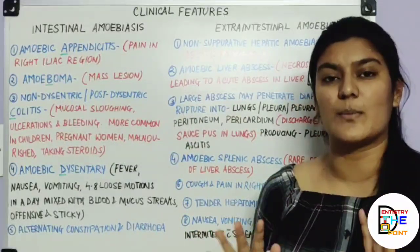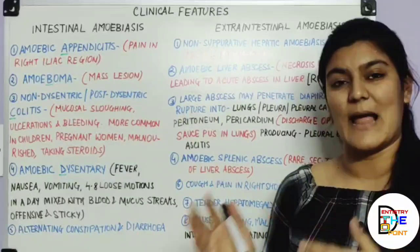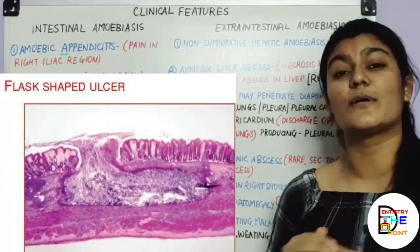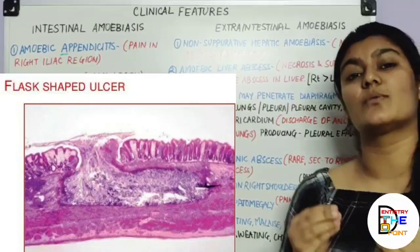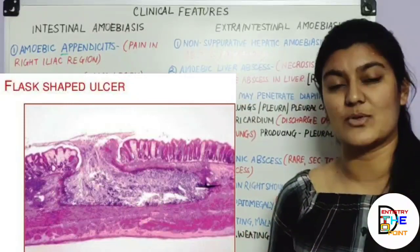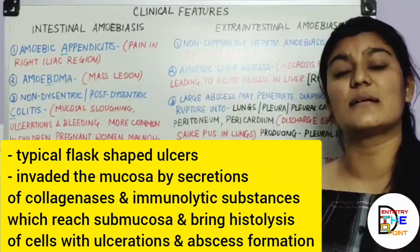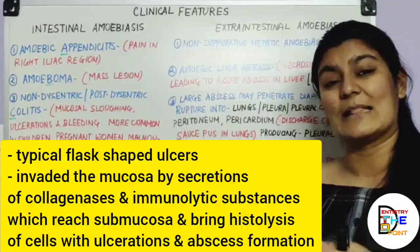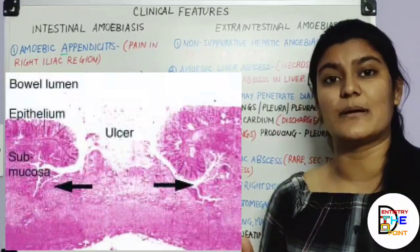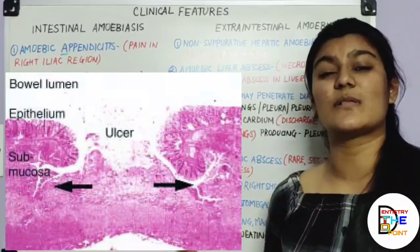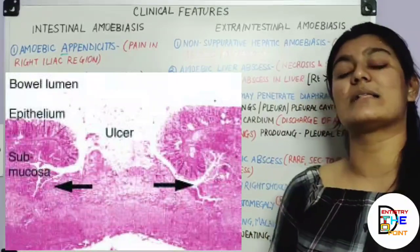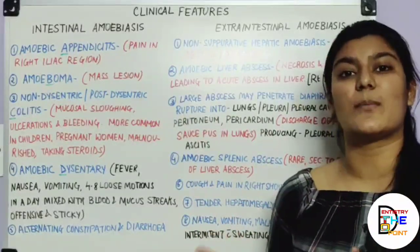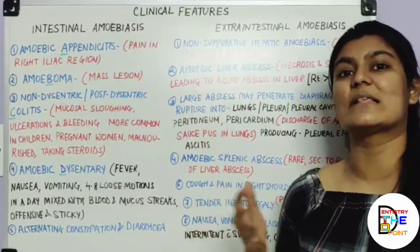Entamoeba histolytica produces typical ulcerations known as flask-shaped ulcers of the intestinal mucosa. The organism invades the intestinal mucosa by releasing substances like collagenases and immunolytic substances, which go into the submucosa and deeper layers, causing histolysis of cells. This results in ulcerations and abscess formations, which are revealed on sigmoidoscopy.